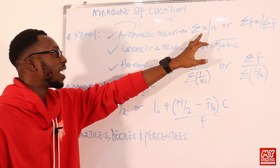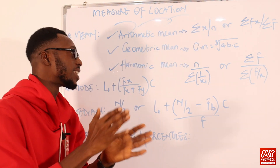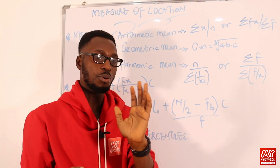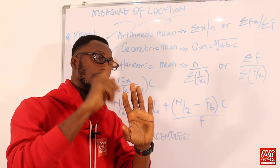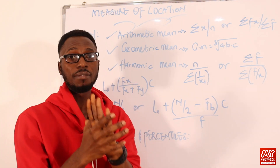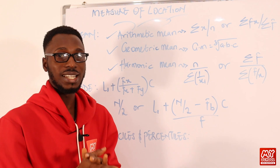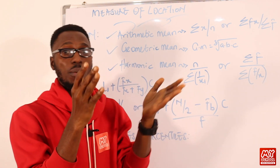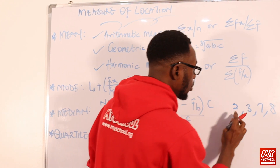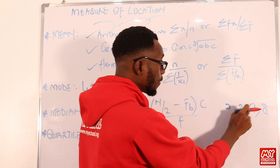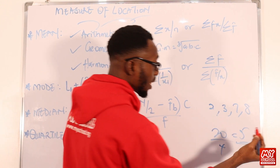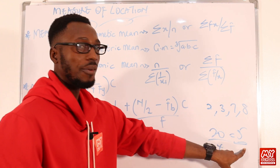Let's start with arithmetic mean. The formula is: sum total divided by how many items you have — sum over size. For instance, if I find the mean of my fingers on my left hand: one, two, three, four, five — so five divided by five equals one. If I have the values 2, 3, 7, 8, I add them up: 2+3+7+8 = 20, divided by 4 items. That is my mean — you are looking for the average.